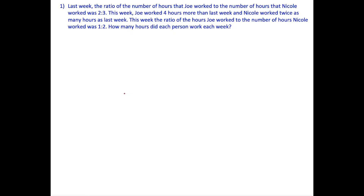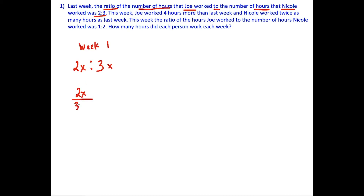Take a moment to read through this first question. The first important piece of information we have is the ratio of the number of hours that Joe works to the number of hours that Nicole works was 2 to 3 in week one. We could write an x next to 2 and 3, because if we compare 2x over 3x, x over x cancels, bringing us right back to 2 to 3.